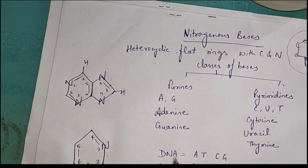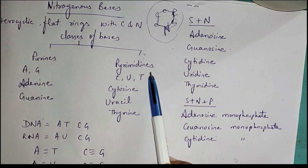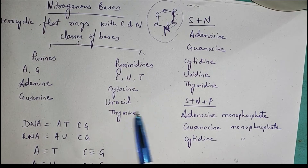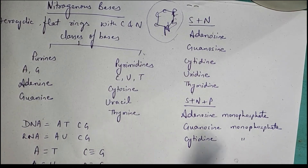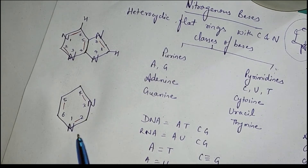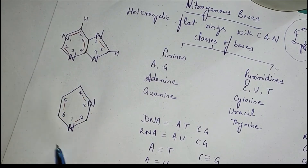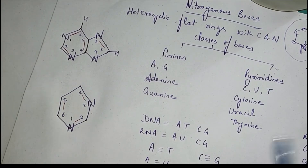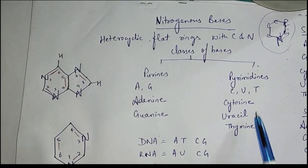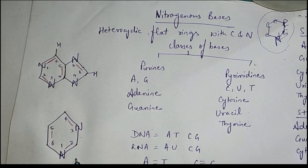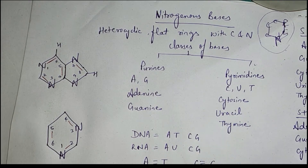The other class of bases is pyrimidines. Under pyrimidines there are three members: cytosine, uracil, and thymine. Pyrimidines have a basic single-ring structure, and cytosine, uracil, and thymine have this basic structure somewhat modified in each case.